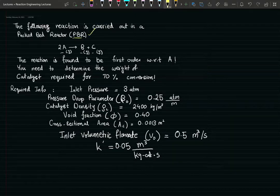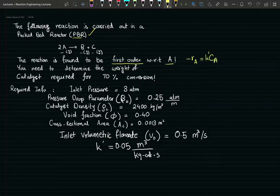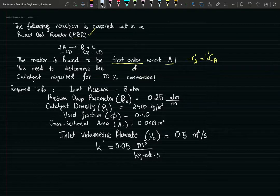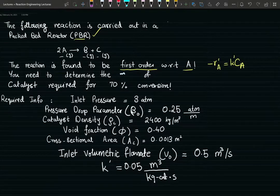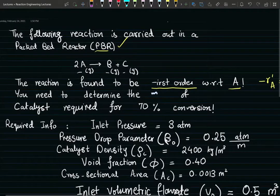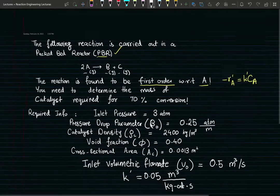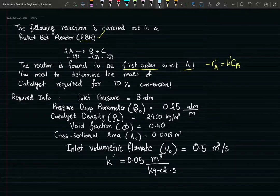The reaction is found to be first order with respect to A, so the rate expression is going to look something like this. We need to determine the mass of the catalyst — that's what we need — required for 70% conversion. So we have our desired conversion.